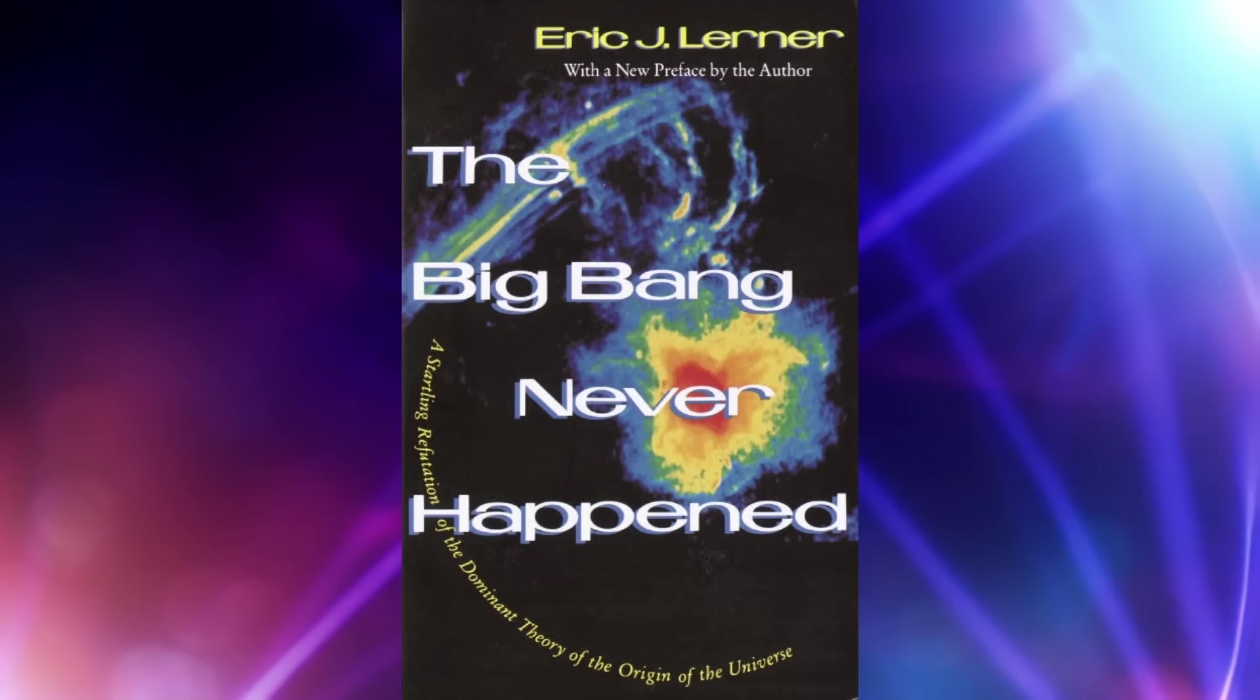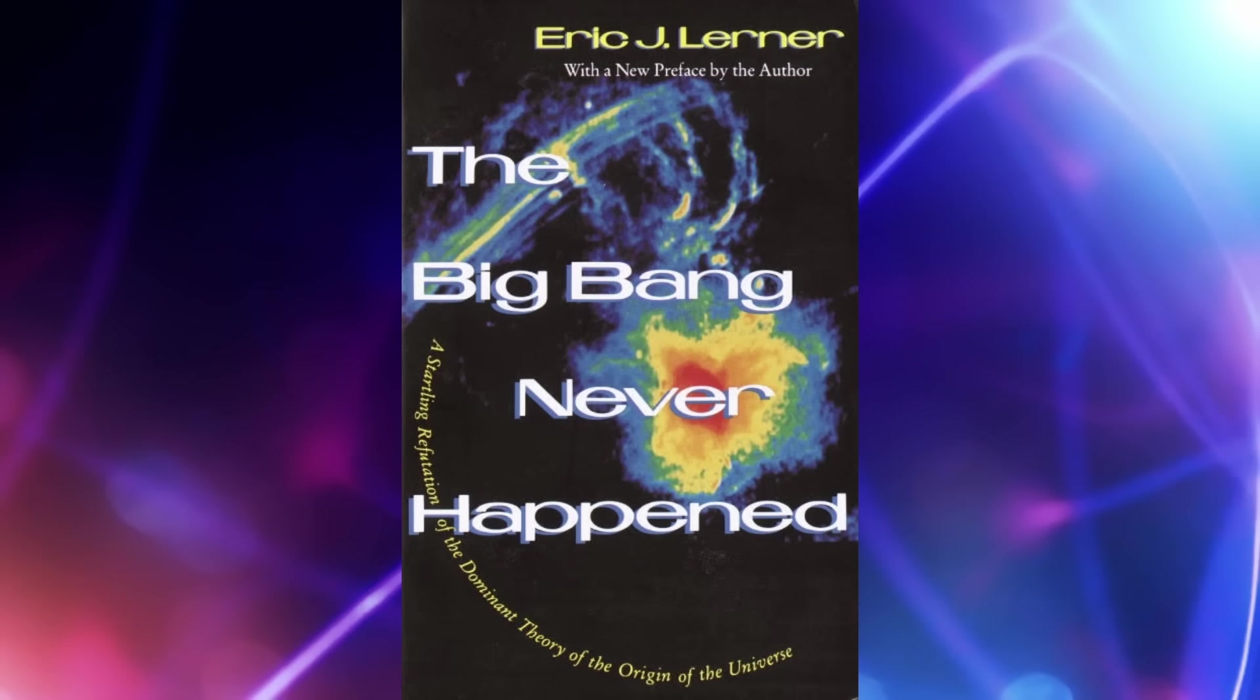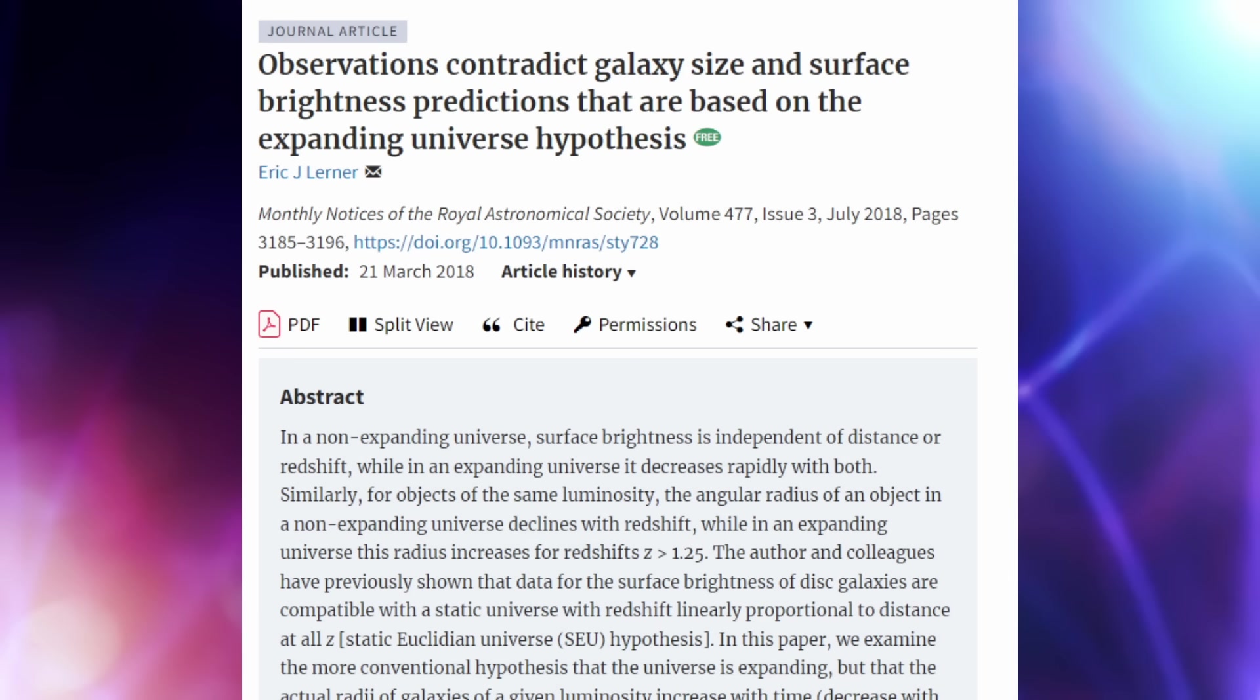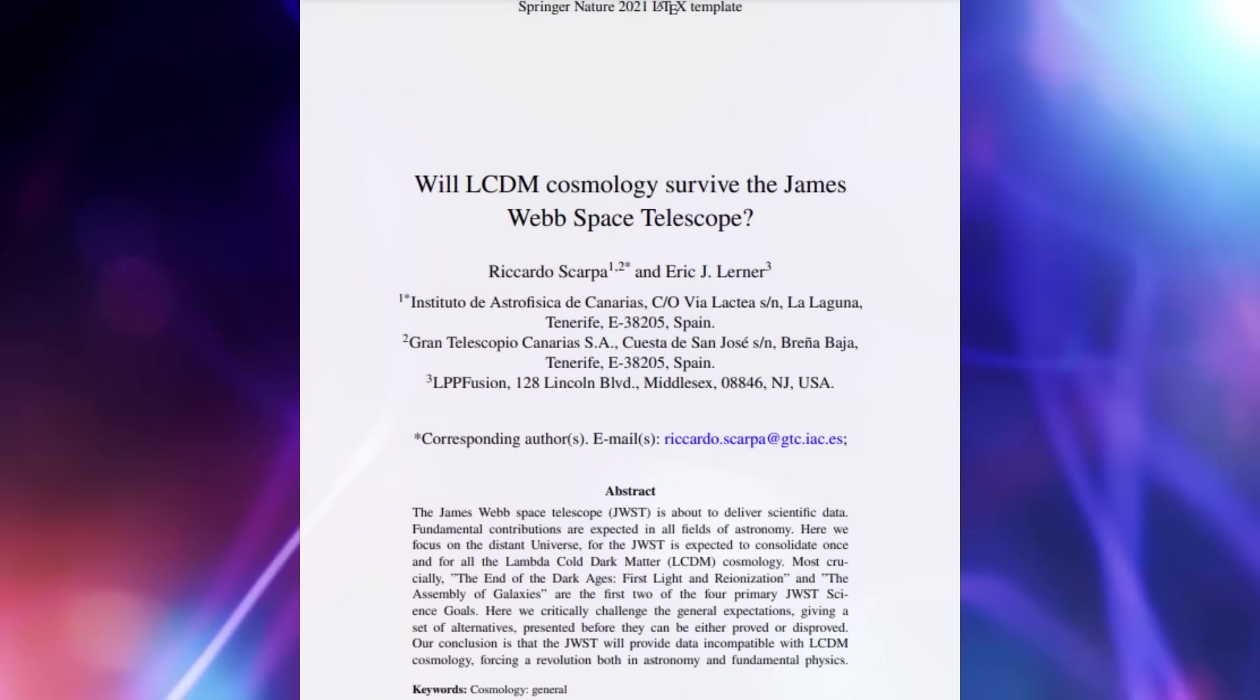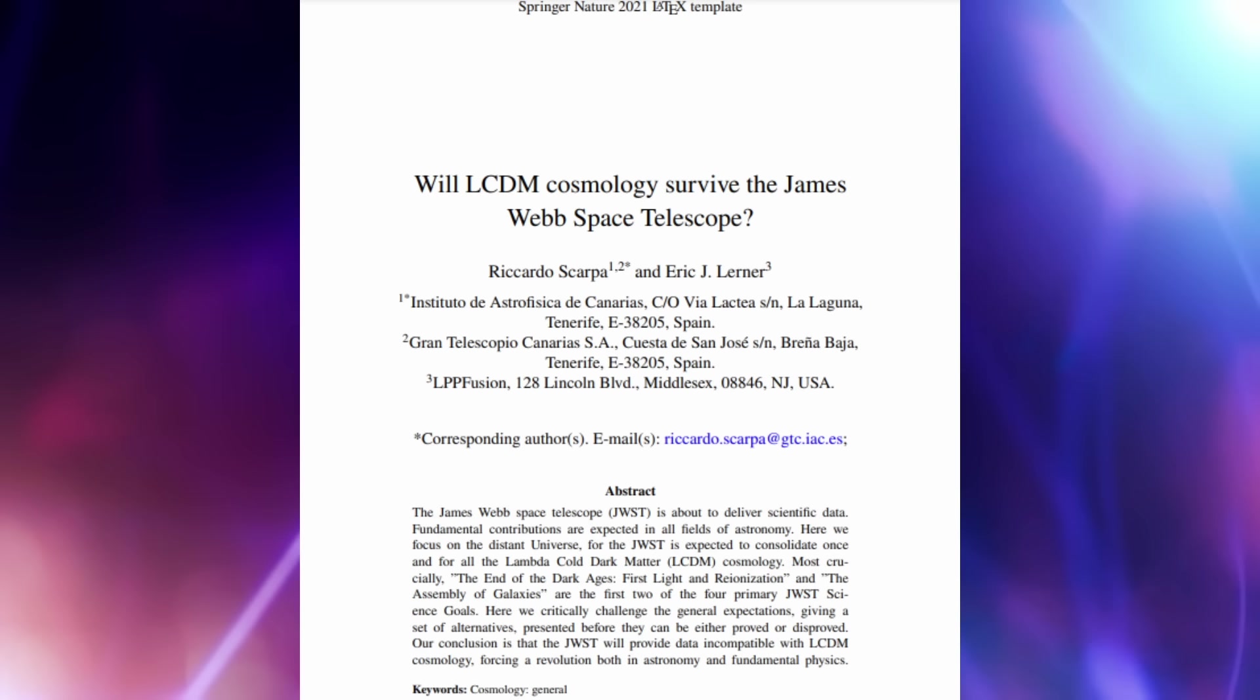This book was originally published in 1992 and since then he has written numerous articles, one of which was published in the Royal Astronomy Society titled Observations Contradict Galaxy Size and Surface Brightness Predictions that are based on the expanding universe hypothesis. More recently he published a paper prior to the James Webb Space Telescope turning on outlining his predictions of what they would find and not find.